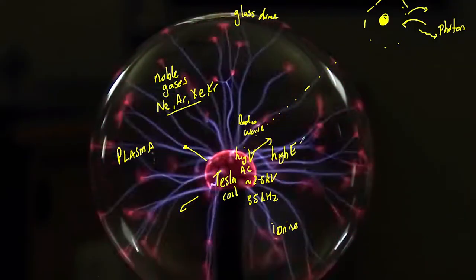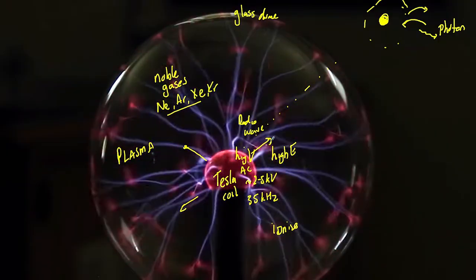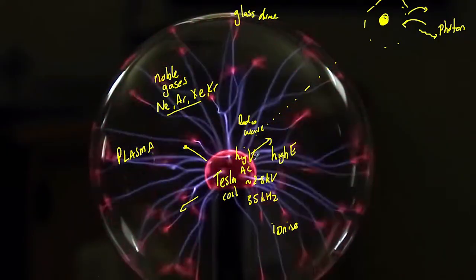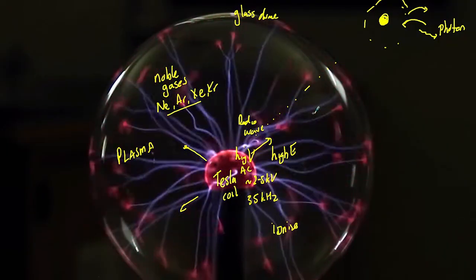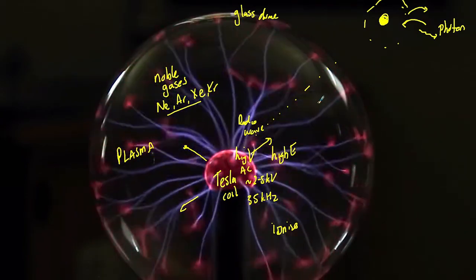So that, in essence, is what causes these tendrils of plasma. It's these electrons moving from the inner dome to the outer dome. But in the process, they're going to be releasing light.